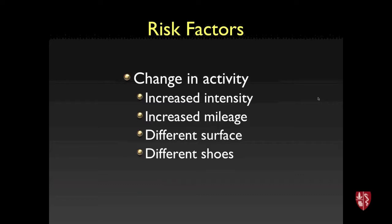Risk factors often include increased intensity of activity or increased mileage. A common scenario is a freshman runner going from 50–60 miles per week in high school up to 100–120 miles per week in college, which really overloads the skeleton if not ramped up slowly and carefully.